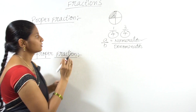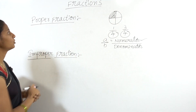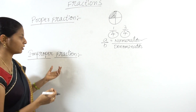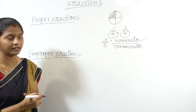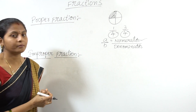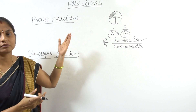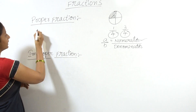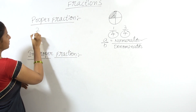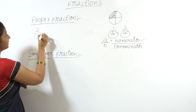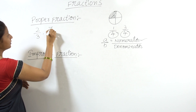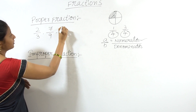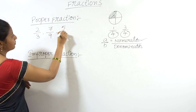Now, types of fractions are the proper fraction and improper fraction. We have fractions in the p by q formula. I will give you some examples: 2 by 3, 7 by 9, 5 by 13.